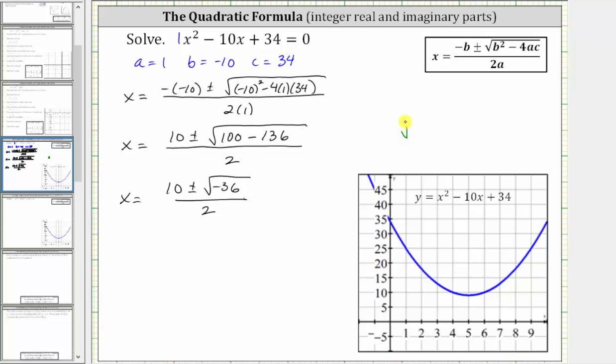The square root of negative 36 is equal to the square root of negative one times 36. We know the square root of 36 is six. The square root of negative one is i. This is equal to six i,